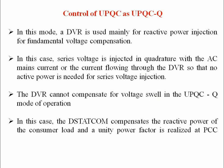Voltage swell is the rise in voltage, whereas voltage SAG is the reduction in voltage. SAG, swell, flicker, and harmonics — everything we have discussed previously — are the power quality issues or power quality problems that we frequently encounter in the transmission system.